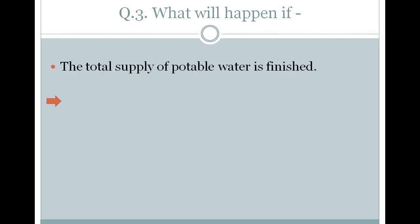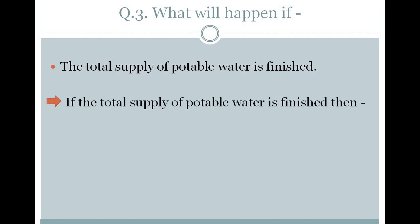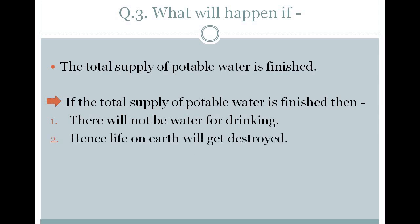The next question is: the total supply of potable water is finished. Potable water is the water which we can drink. If the total supply of potable water is finished, then first there will be no water for drinking. And if water is not there, there will be no life on the earth. Hence, life on the earth will get destroyed.